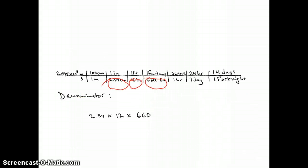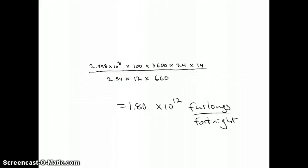The important digits in our denominator are 2.54, 12, and 660. Multiply it all together and you get 1.80 times 10 to the 12th furlongs per fortnight, the speed of light as everyone knows. Thanks for watching.